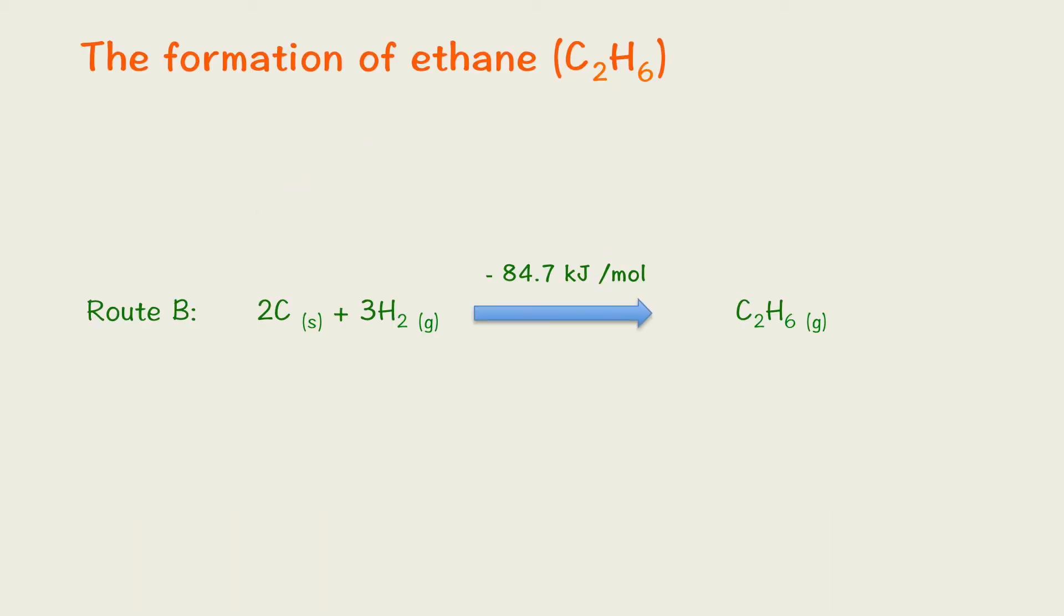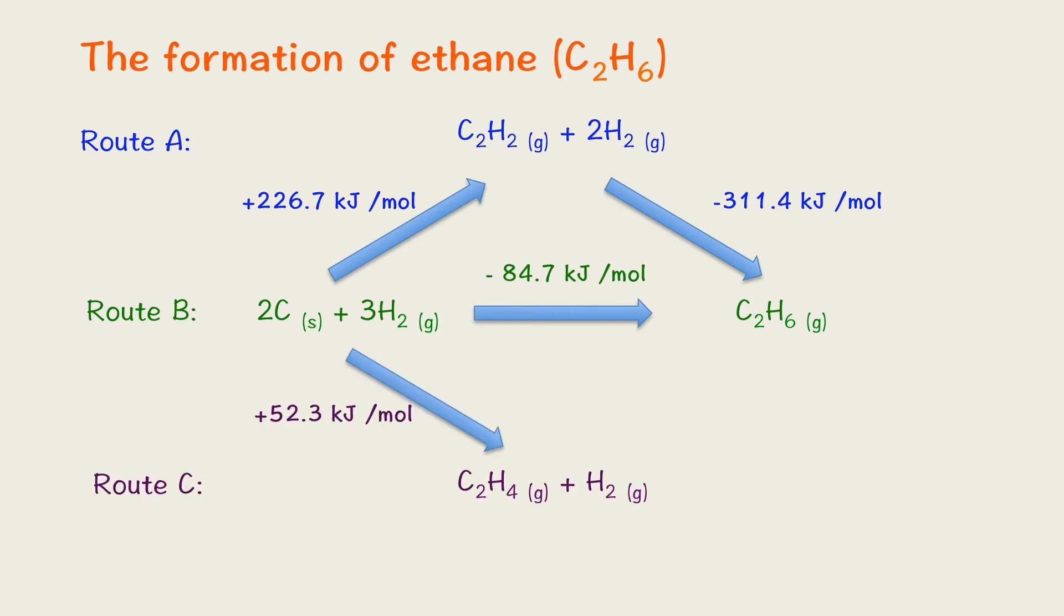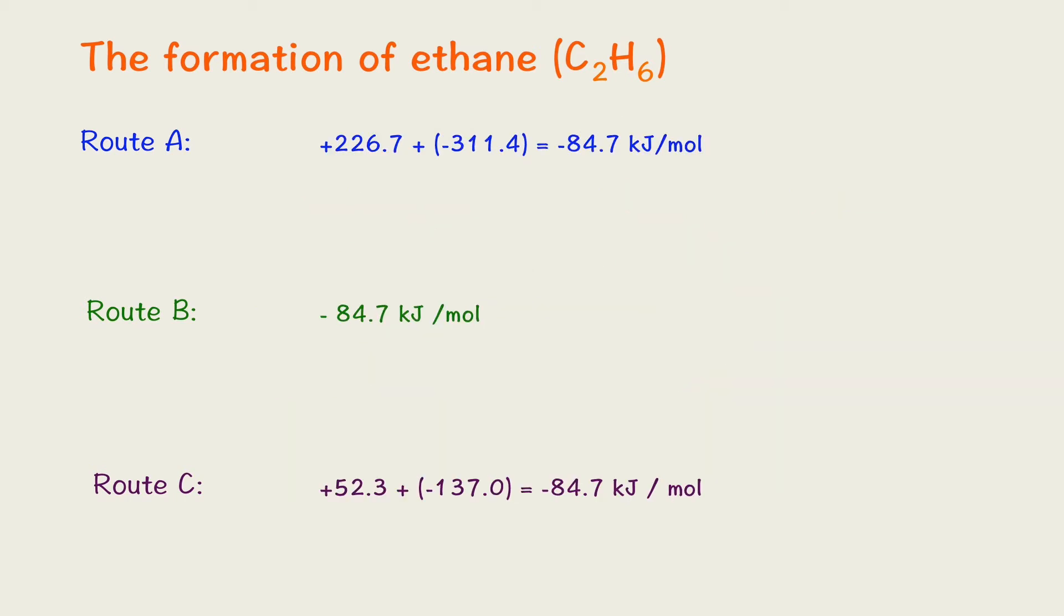We use the formation of ethene as an example. Row B is what we have learned so far. This is the enthalpy change of formation of ethene and we can choose row A first from something called C2H2 first then come to the ethene or you can choose from ethene first then from ethene. From this three row you can see actually the enthalpy change will be the same.